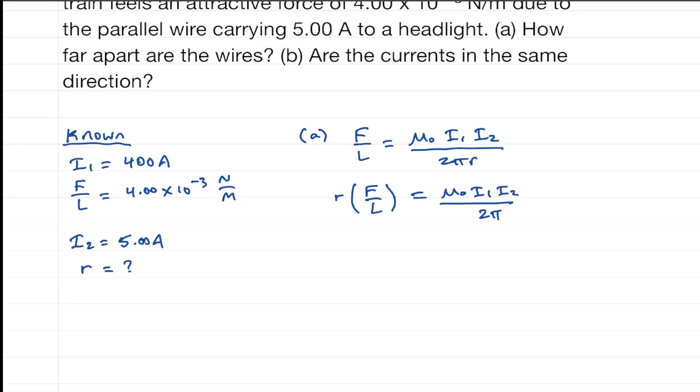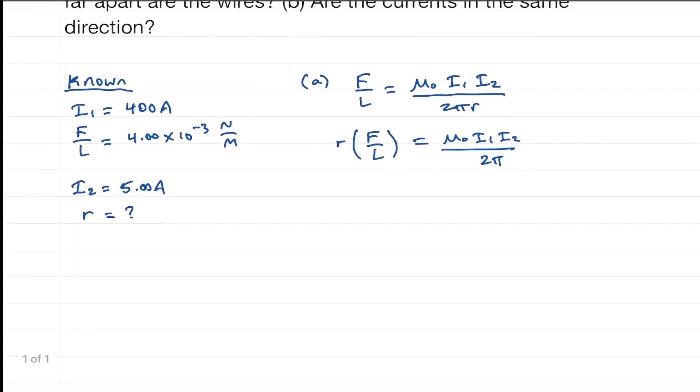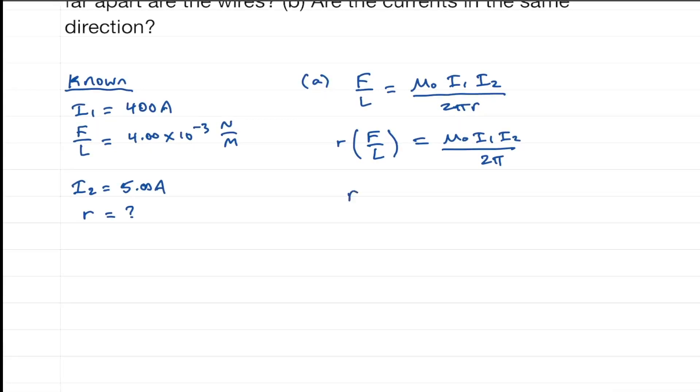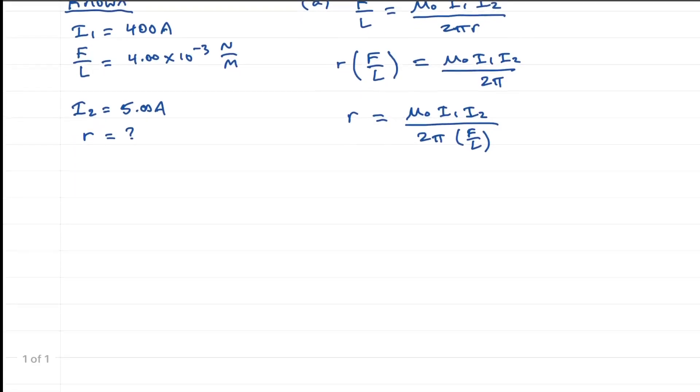And now we just have to divide by the f over l. So r equals mu 0, i1, i2, over 2 pi, and we have an f over l. Okay, so we can find r now. Let's plug in all the quantities.